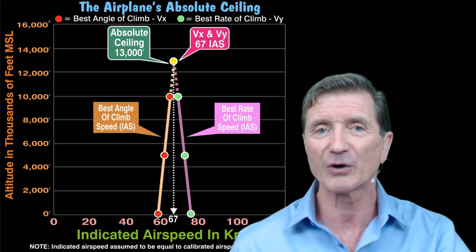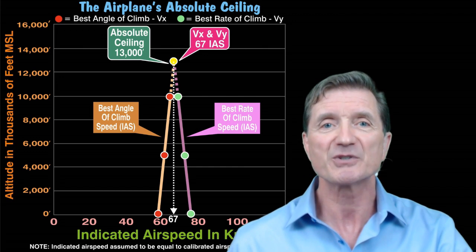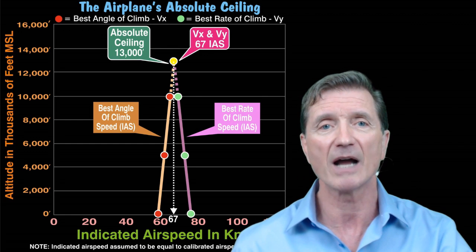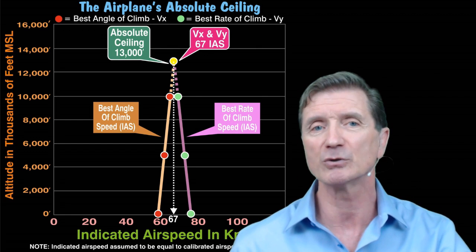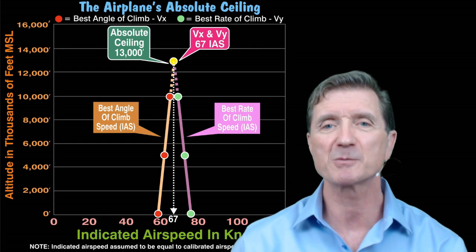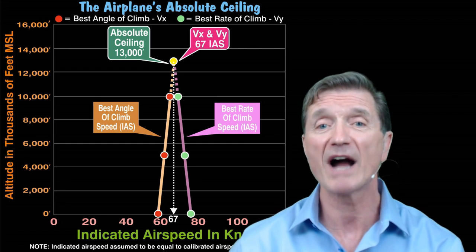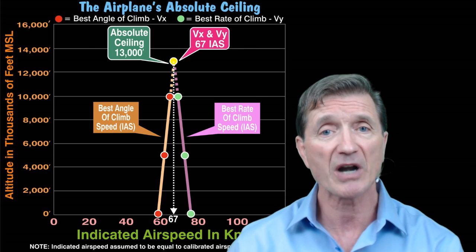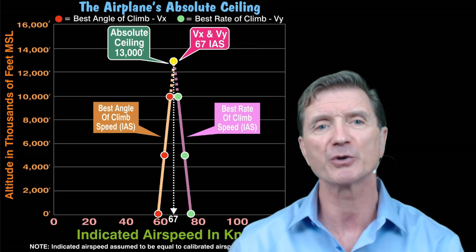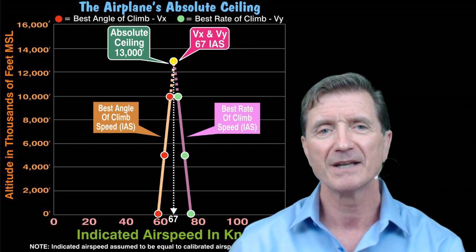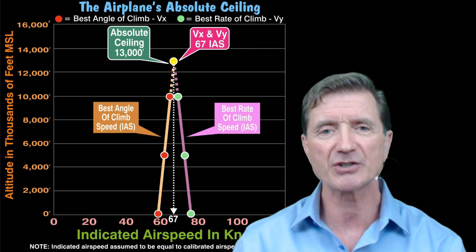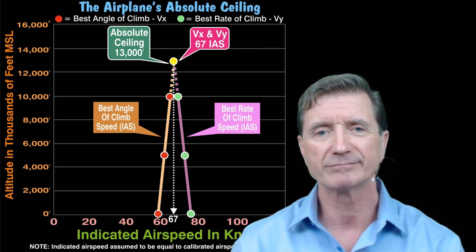In fact, the point at which they converge is the point where the airplane has zero rate of climb, also known as its absolute ceiling. So there you have it — a brief explanation as to why VX and VY converge on each other as true airspeeds and as indicated airspeeds. Thank you very much for tuning in to my Aviation Learning Center. I've been Rod Machado.